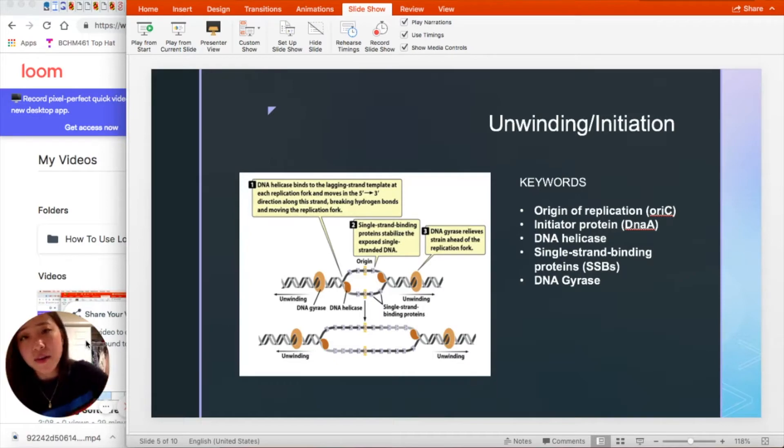So you can follow along in the diagram on the left. We have the initiator protein, DNA A, which binds to the DNA sequence origin C. And helicase, which is, where's my mouse?